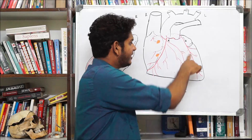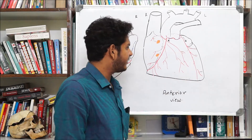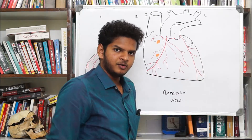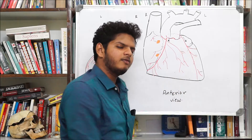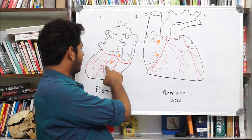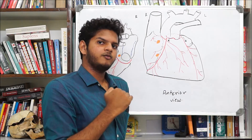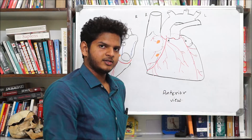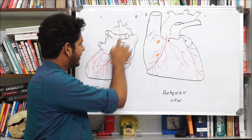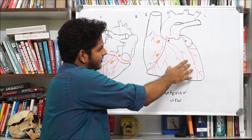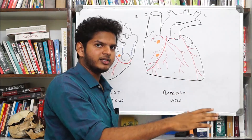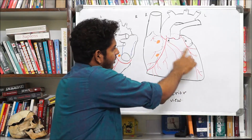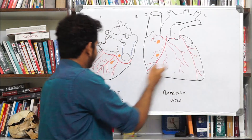The LAD artery supplies the left ventricle and the anterior two-thirds of the interventricular septum. The right coronary artery supplies the posterior inferior one-third of the interventricular septum. The LAD also supplies the entirety of the interatrial septum.